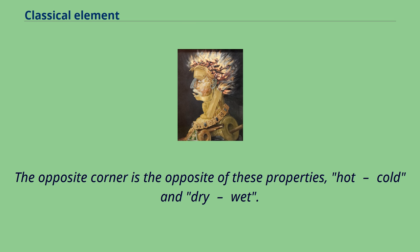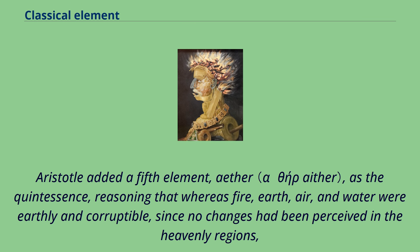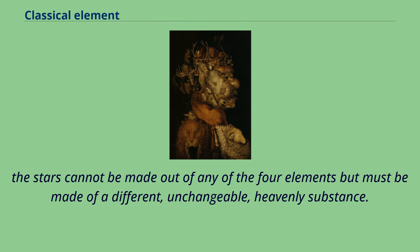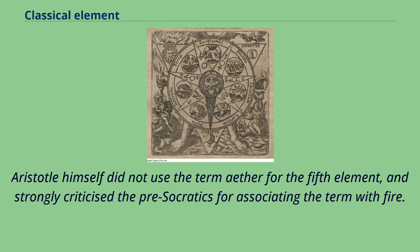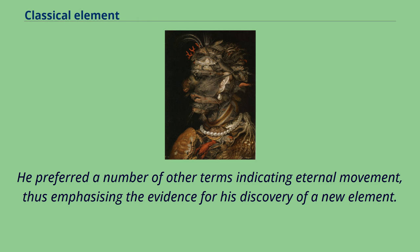Aristotle added a fifth element, ether, as the quintessence, reasoning that whereas fire, earth, air, and water were earthly and corruptible, since no changes had been perceived in the heavenly regions, the stars cannot be made of any of the four elements but must be made of a different, unchangeable, heavenly substance. It had previously been believed by pre-Socratics such as Empedocles and Anaxagoras that ether — the name applied to the material of heavenly bodies — was a form of fire. Aristotle himself did not use the term ether for the fifth element, and strongly criticized the pre-Socratics for associating the term with fire. He preferred a number of other terms indicating eternal movement, thus emphasizing the evidence for his discovery of a new element.